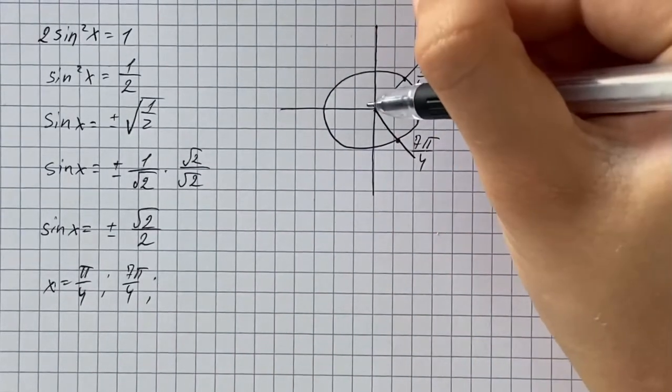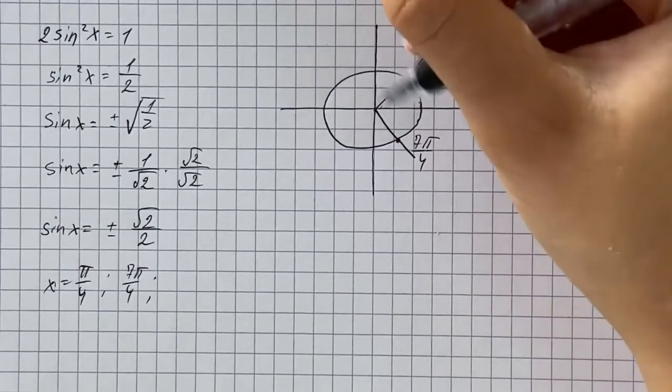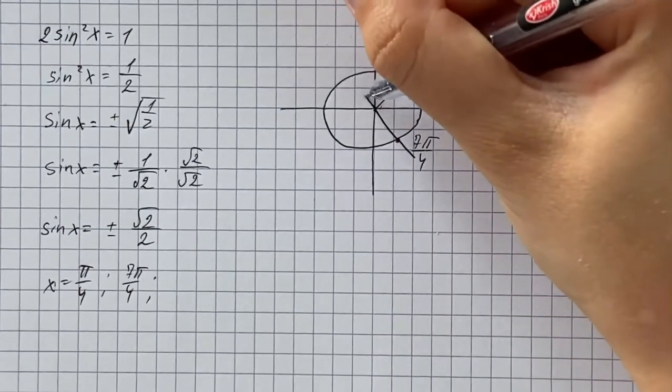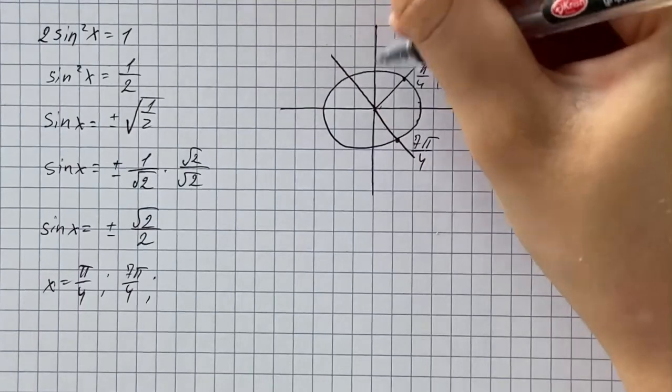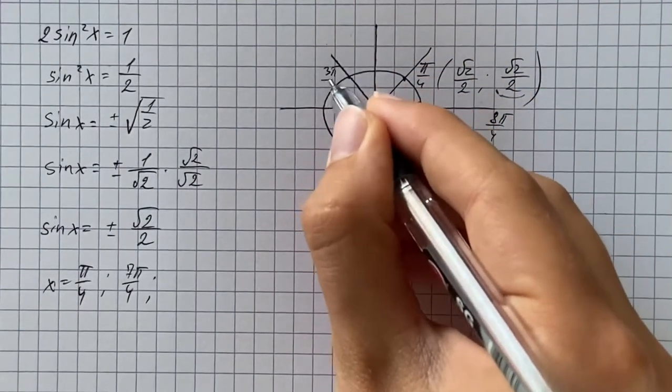Also we're going to have negative values, so we reflect this angle about the y-axis, and here we get 3 pi over 4.